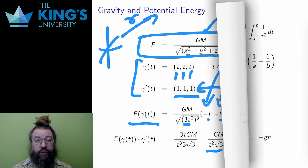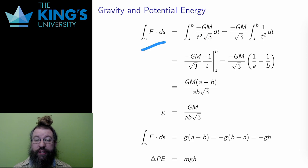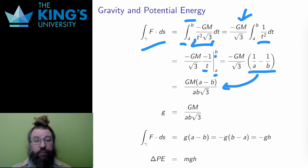The line integral is the integral of this dot product in t over the domain, which is a to b. -GM/√3 is a constant, so I'll pull that out of the integral. I do the power rule integral and evaluate on the bounds. Going to common denominator, I get GM(a-b)/(ab√3). This is negative, since b is larger than a, representing the difficult work that the path has to do to go away from the gravitational source.